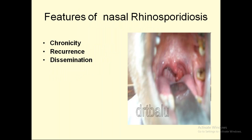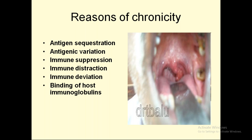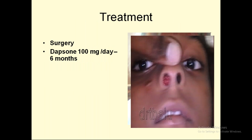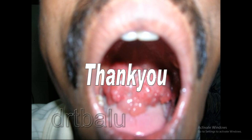Features of nasal rhinosporidiosis include chronicity, recurrence, and dissemination. Reasons for chronicity include antigen sequestration, antigenic variation, immune suppression, immune distraction, immune deviation, and binding of host immunoglobulins. Treatment is surgery and Dapsone 100 mg per day for 6 months.